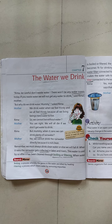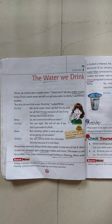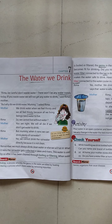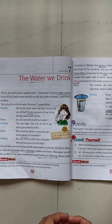Boiling is the process whereby germs in the water are killed by heating. When we heat the water, all the germs die — that is called boiling. Filtering is the process which cleans water by removing impurities. The process where all impurities are removed is called filtering. By boiling and filtering, the germs in the water are killed and water becomes fit for drinking.